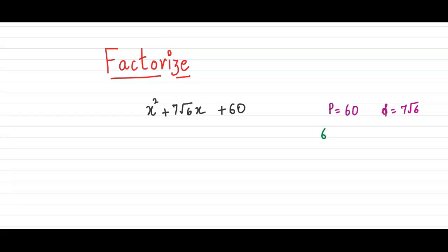let's write 60 as a product of some numbers so we know it's the product of 5 and 12. Now, next step is that we can split 12 as 2 into 6.